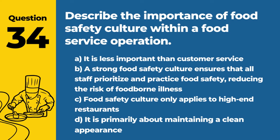Question 44. Describe the measures for controlling the spread of antibiotic-resistant bacteria through food. Answer: B. Ensuring proper cooking temperatures and supporting responsible antibiotic use in agriculture. Responsible use of antibiotics in food production and adherence to safe cooking practices are essential strategies to combat the spread of antibiotic-resistant bacteria.